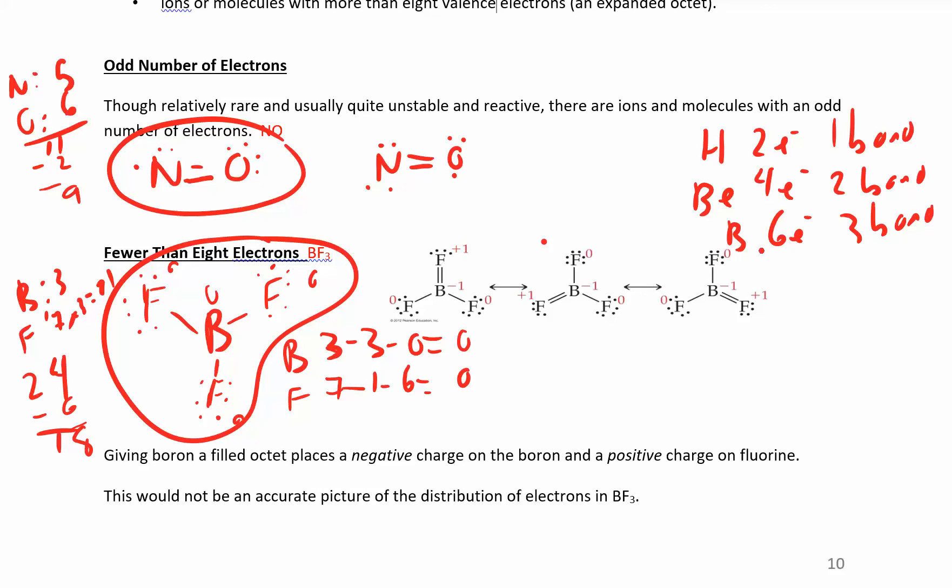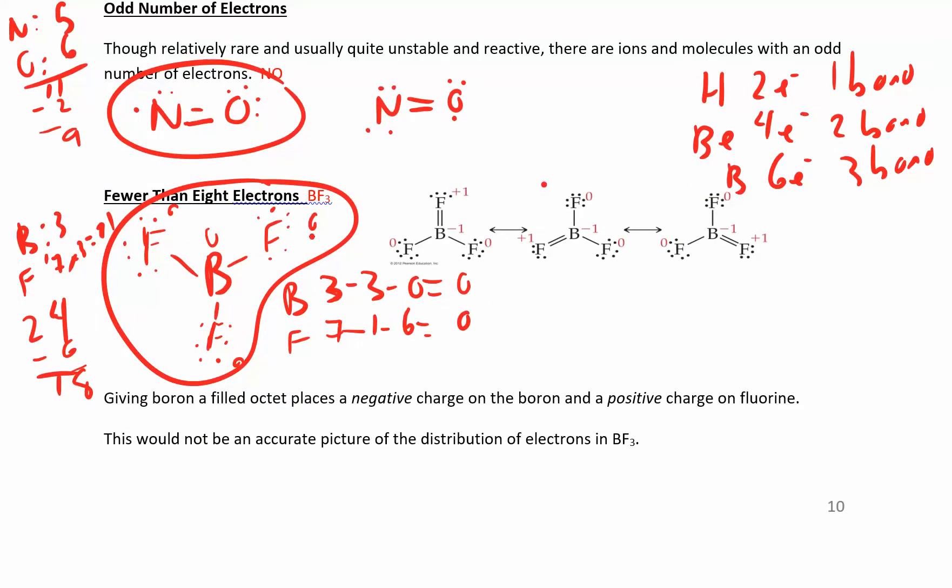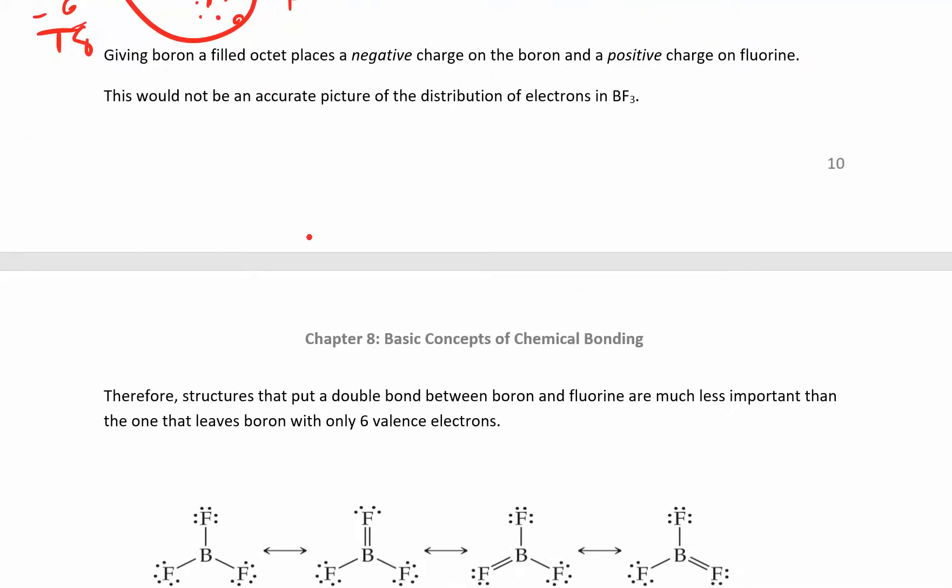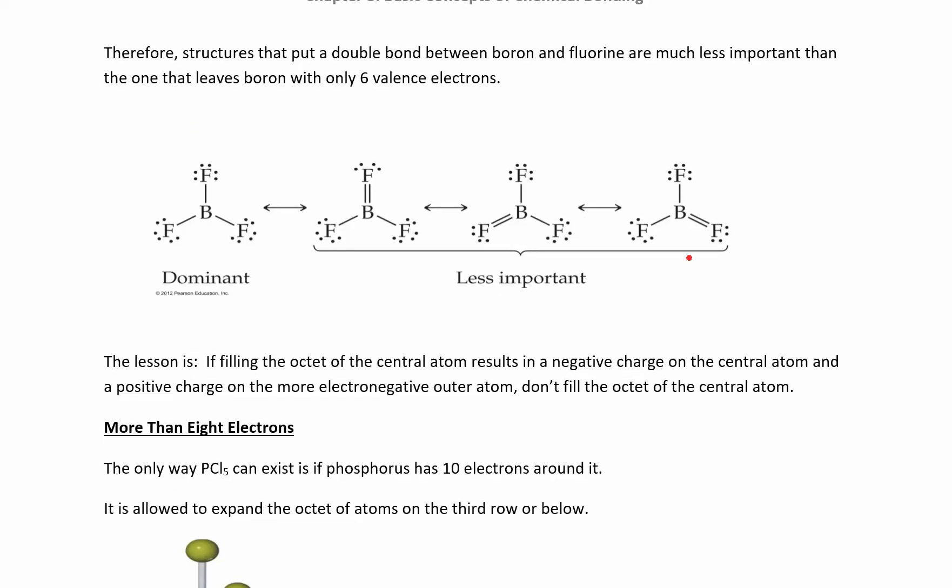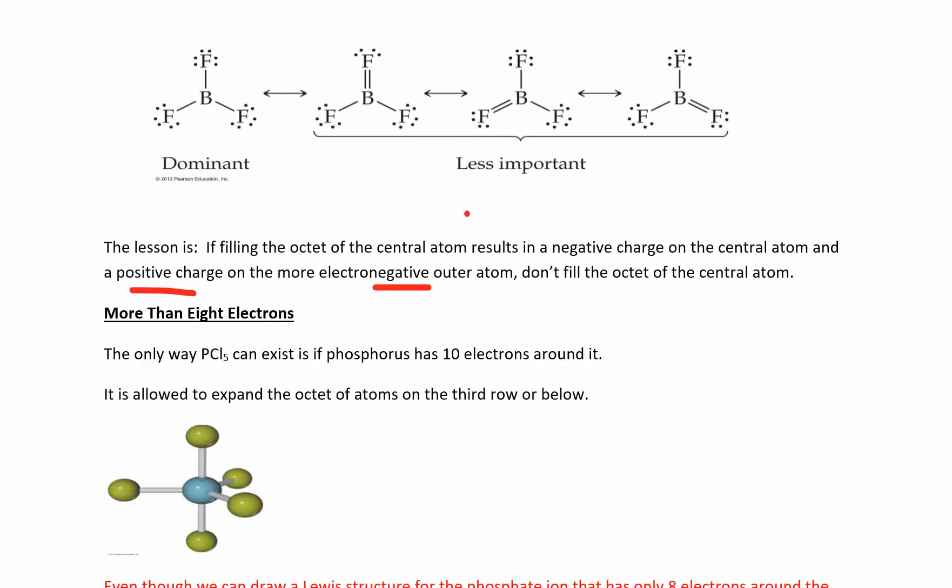These guys are really small, hydrogen, beryllium, and boron. And so they're going to have fewer than eight electrons, and that's okay. And so this is the dominant structure. These are kind of less important because they have terrible formal charges. So if filling the octet on the central atom results in a negative charge on the central atom and a positive charge on one of the more electronegative atoms, then don't fill up the octet on the central atom. So if you just remember that boron is happy just forming three bonds or having six electrons around it, you're going to be fine.